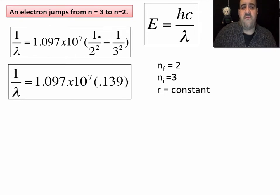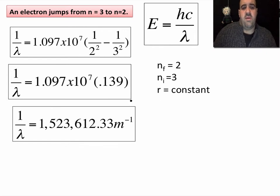One over four minus one over nine times this big number equals one over lambda. And it just so happens that one over four minus one over nine is 0.139. Multiply it by this number, you end up with 1,523,612.33 and meters to the minus one. What does that mean?